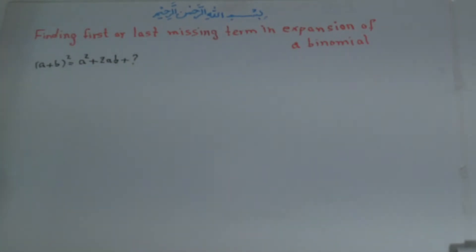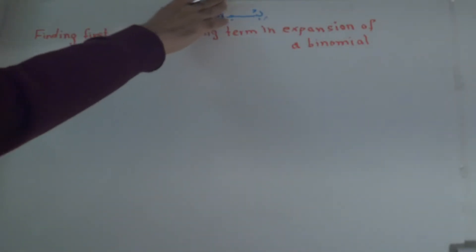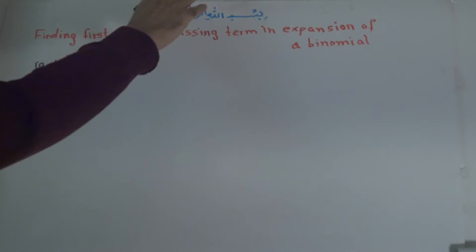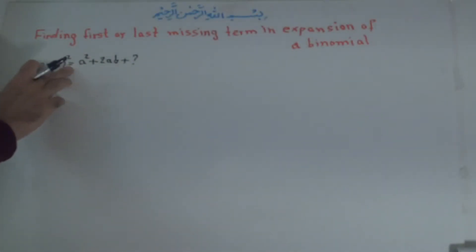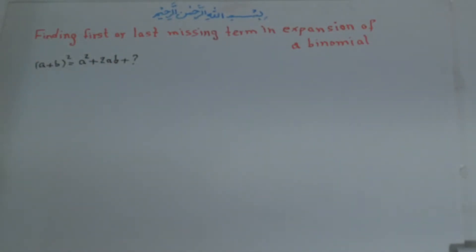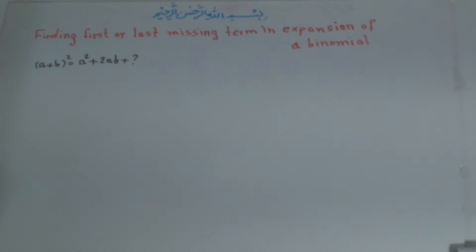In the previous lesson, the middle term was missing. But now, it can either be the first term or the last term that is missing. For finding this question mark, or the missing term, what do we do?